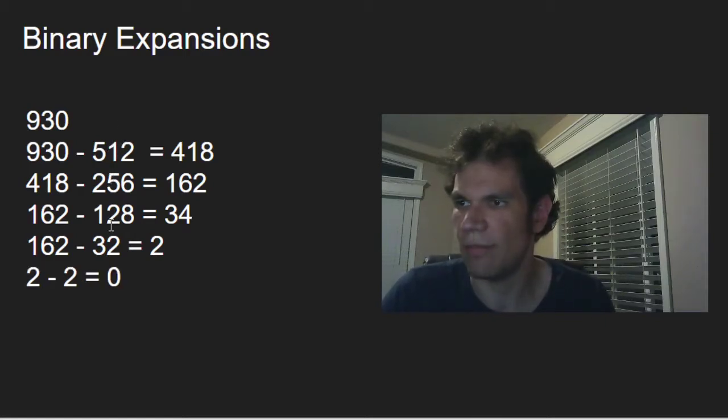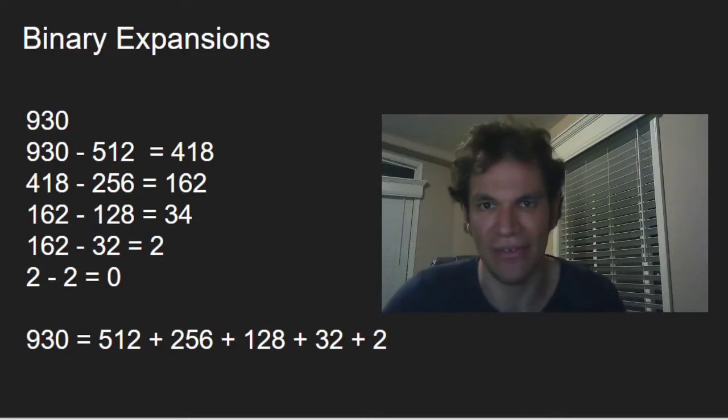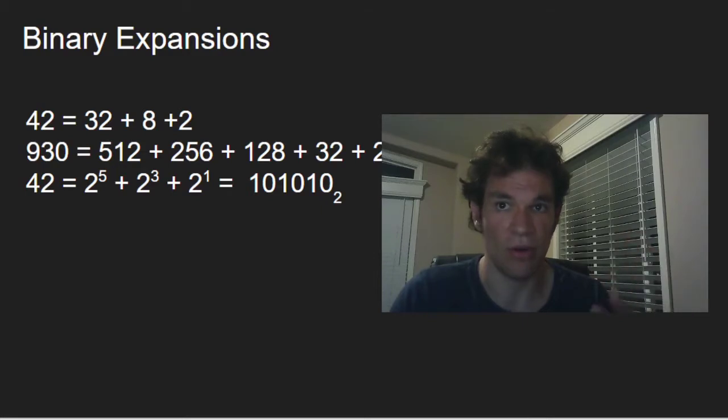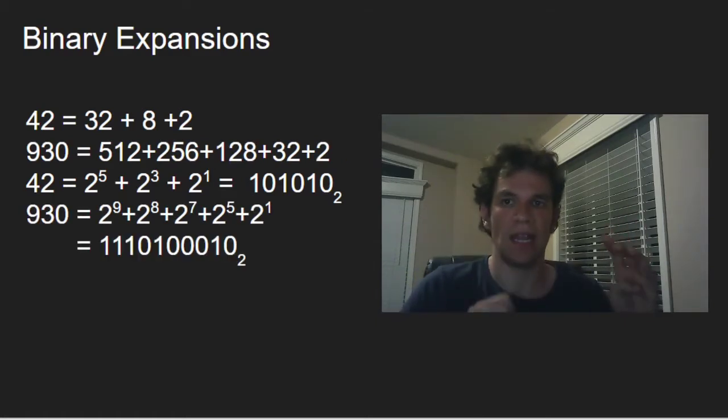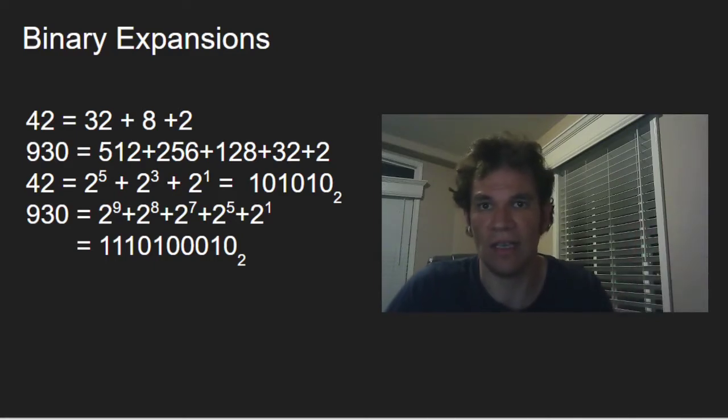Now the sum of these powers of 2 will be 930. Something important is that the binary expansion corresponds with the way in which the numbers are expressed in binary. If you check the binary expansion from right to left, those ones match with the exponents on the 2s.